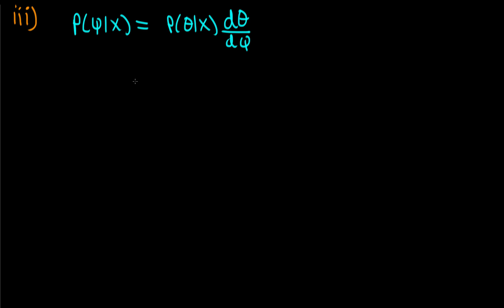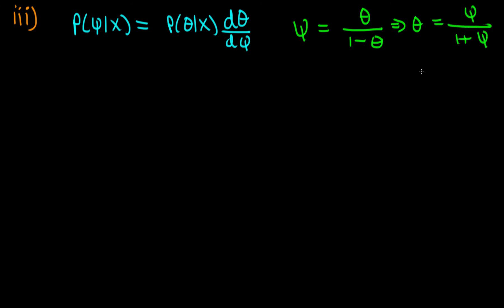Now let's apply it. We know psi equals theta over one minus theta, which rearranges to theta = psi over one plus psi. Since psi is always non-negative, psi over one plus psi is always less than or equal to one — equal to one in the limit as psi goes to infinity.